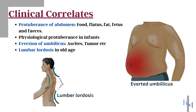Some degree of protuberance is physiological in infants. Eversion of the umbilicus indicates raised intra-abdominal pressure; it may be associated with fluid in the peritoneal cavity or some tumor. Excess fat in old age, coupled with atrophic abdominal wall muscles, may lead to lumbar lordosis.